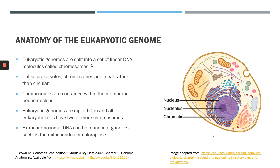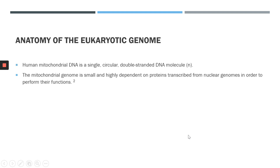In addition to nuclear DNA, eukaryotic cells may also contain extra-chromosomal DNA — DNA that's not contained within the nucleus. This can be in the form of mitochondrial DNA, or chloroplasts in the case of plants. Human mitochondrial DNA is also a single, circular, double-stranded DNA molecule. The mitochondrial genome is much smaller than the nuclear genome, and it's highly dependent on proteins transcribed from the nuclear genome in order to perform their function.